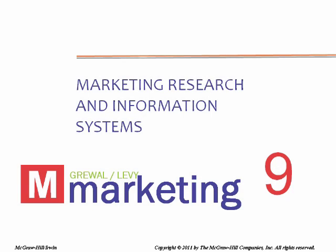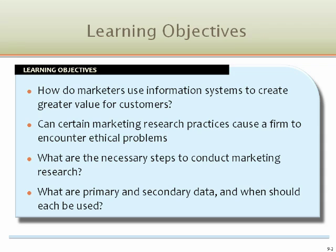Chapter 9: Marketing Research and Information Systems. The learning objectives guiding this chapter will be explored in detail in the following slides: How do marketers use information systems to create greater value for customers? Can certain marketing research practices cause a firm to encounter ethical problems? What are the necessary steps to conduct marketing research, and what are the primary and secondary data, and when should each be used?